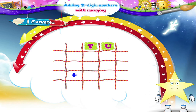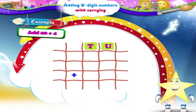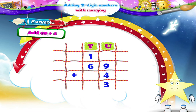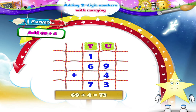Do you know Starry, when you become well-versed with carrying over, you can keep the carried over digit in your mind. For example, add sixty-nine plus four. Nine units plus four units is equal to thirteen units. Here the carried over tens is one. Instead of writing it on top of the tens column, keep it in your mind. Write three in the units column of the answer. Then adding six tens plus one ten, we get seven tens. So sixty-nine plus four equals seventy-three.